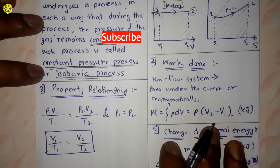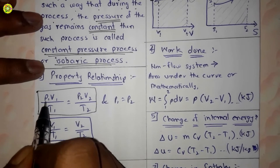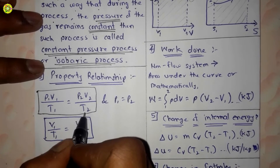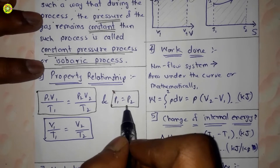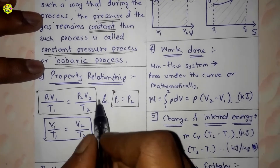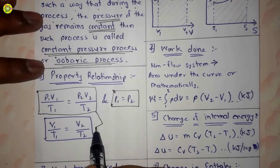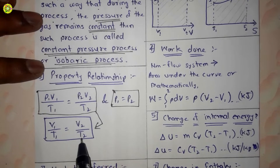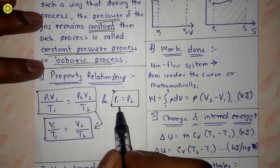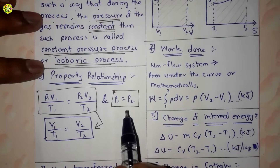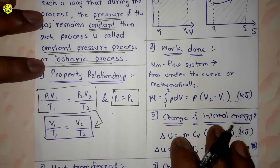Now we will see the property relationship for the constant pressure process. The general equation is P1V1/T1 = P2V2/T2. Since this is a constant pressure process, P1 = P2. Substituting, we get the simplified relationship: V1/T1 = V2/T2 for a constant pressure process.